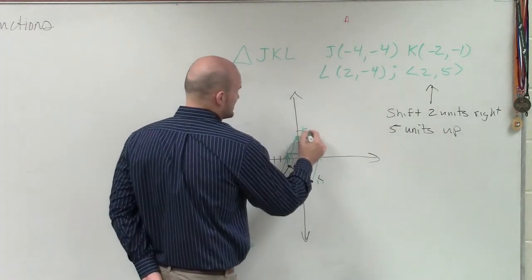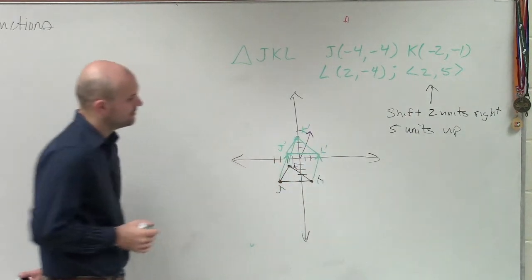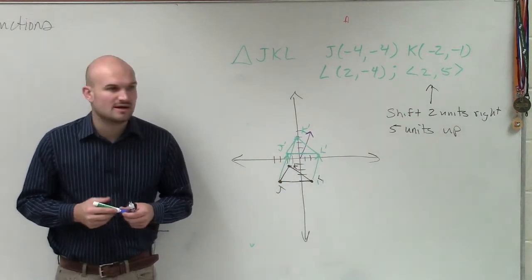And then I can just label them. That's K prime, that is L prime, and that is J prime. Does everybody see what I did or have any questions on that?